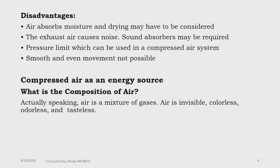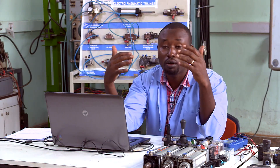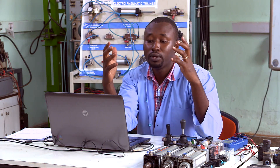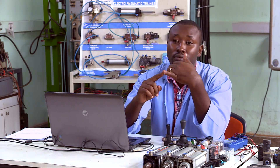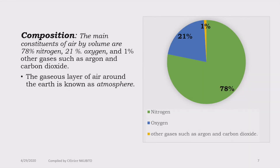Now let's look at compressed air as an energy source. What is air? Air is a mixture of gases. It is colorless — meaning invisible — odorless, and tasteless, but air has mass and we can feel its pressure. The composition of air by volume is 78% nitrogen, 21% oxygen, and 1% other gases such as carbon dioxide and argon.